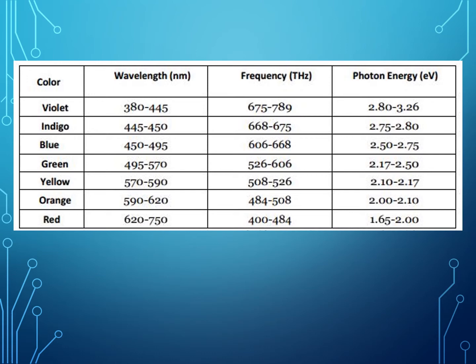They have inverted the representation in this table, so violet is at the top and red is at the bottom. You can see the differences in wavelength as it goes down from the normal rainbow colors. Red has the longest wavelength compared to violet, which has the least. In terms of frequency, red has the least, while violet has a greater amount. In terms of energy or electron volts, violet actually has the greatest amount of energy.